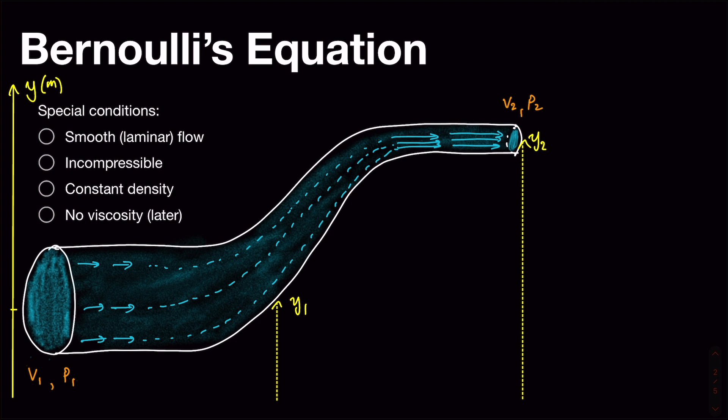But the big assumption here is that we have no viscosity. Now we haven't talked about viscosity just yet, but think of viscosity as like thickness or gloopiness. So honey is very viscous, whereas water is much less so. So imagine that we have something that's extremely runny rather than sort of thick and sticky.